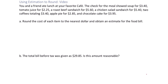You and a friend ate lunch at your favorite cafe. The check for the meals showed soup for three dollars and forty cents, tomato juice for two dollars and twenty-five cents, a roast beef sandwich for five dollars and sixty cents, a chicken salad sandwich for five dollars and forty cents, two coffees totaling three dollars and forty cents, apple pie for two dollars and eighty-five cents, and chocolate cake for three dollars and ninety-five cents. Round the cost of each item to the nearest dollar and obtain an estimate for the food bill.